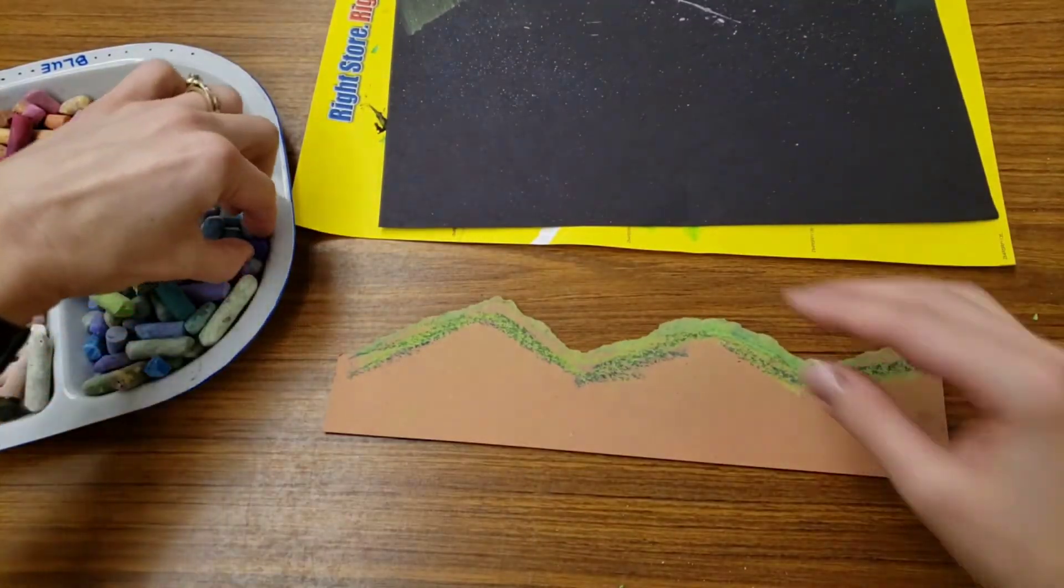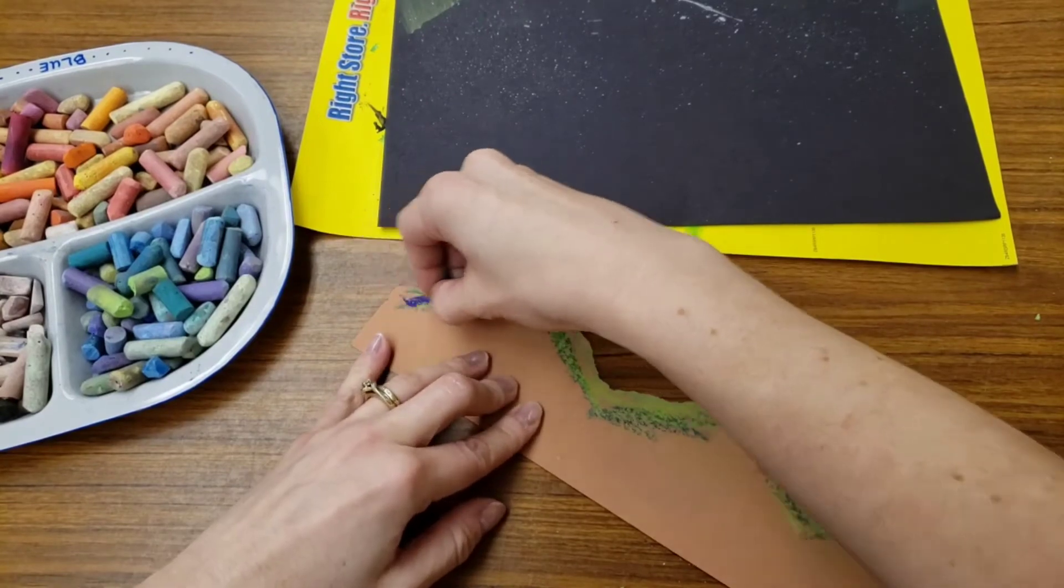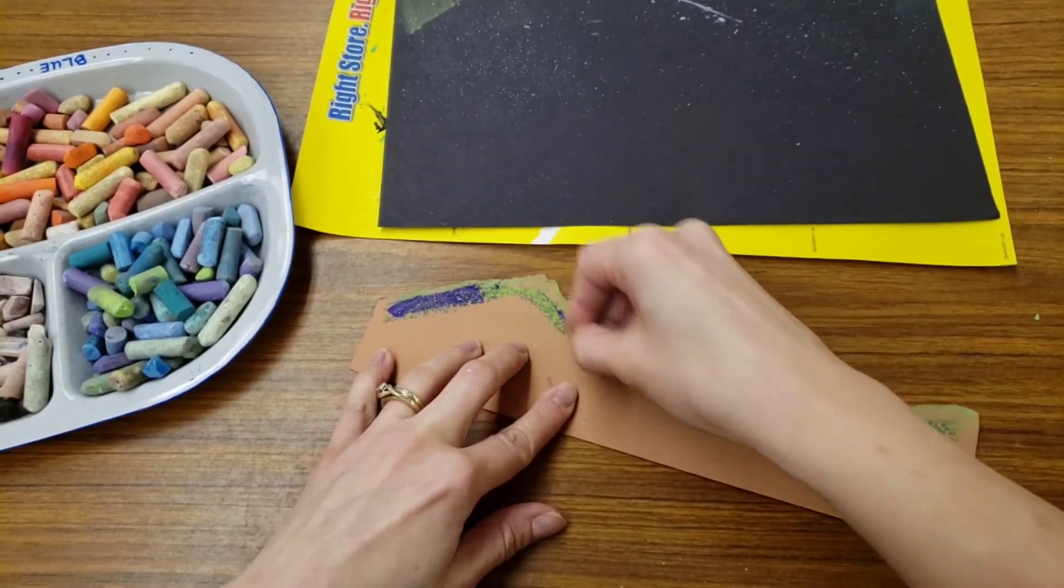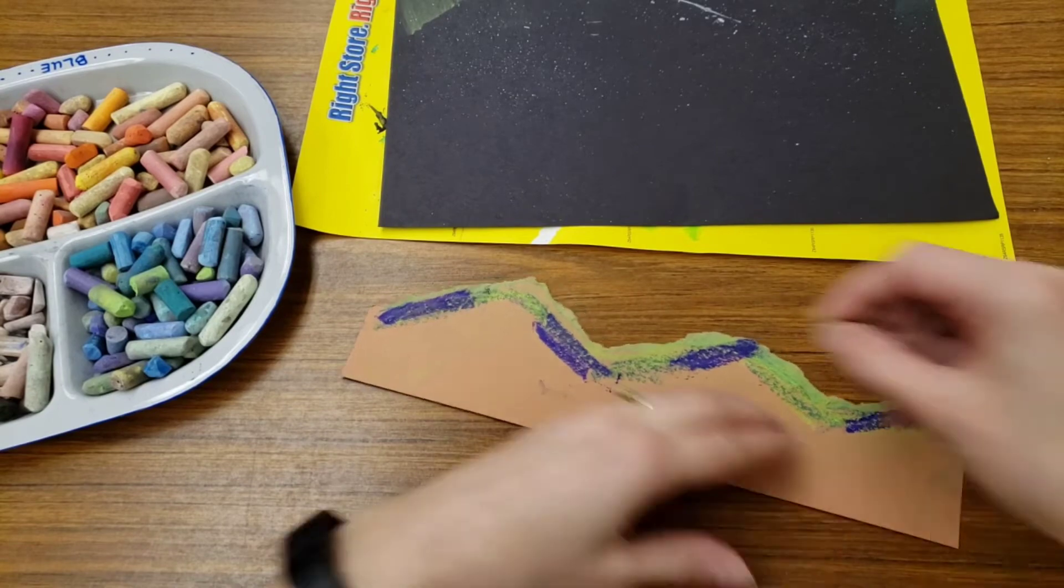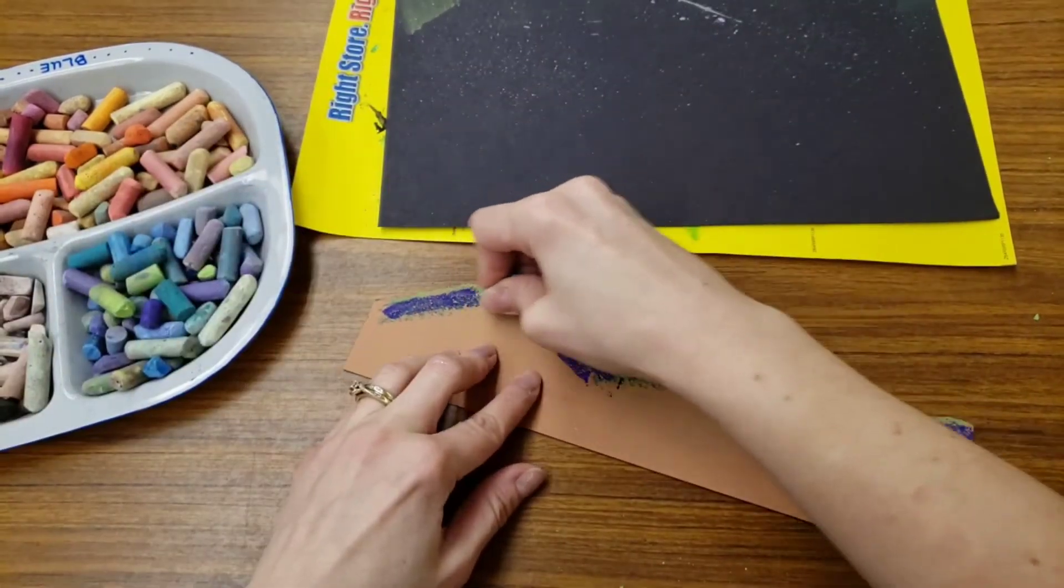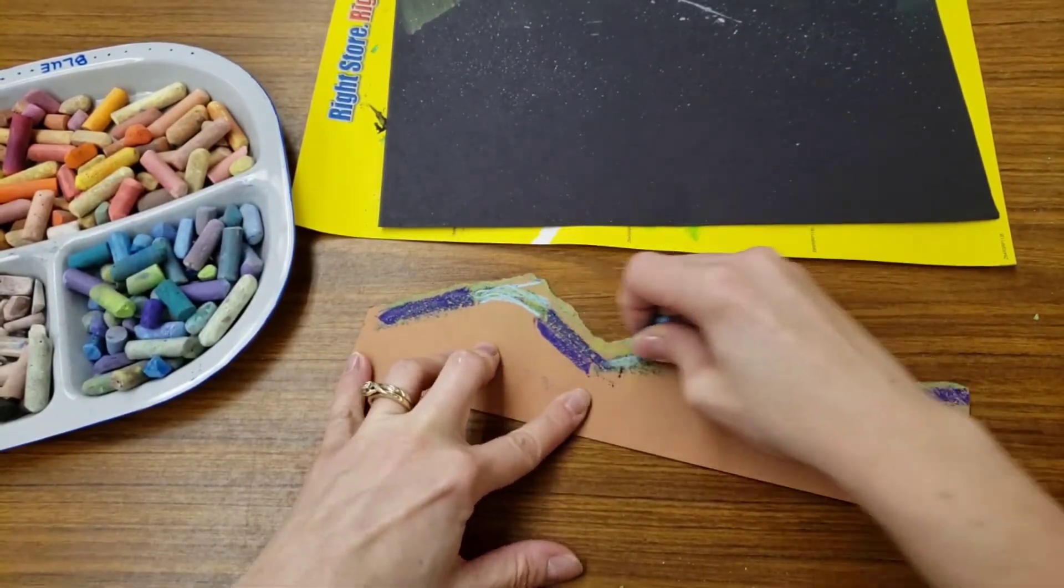Creating those northern lights. If you want to get fancy with it, you could mix up your colors. Like I could put some purple on here, and then go in, and in the gaps put in a little bit of blue.